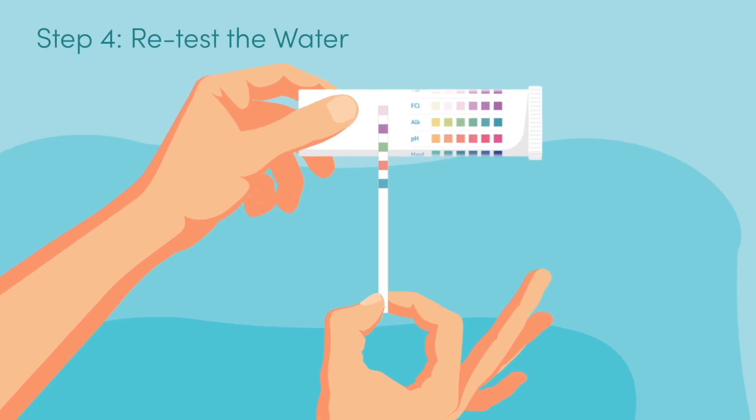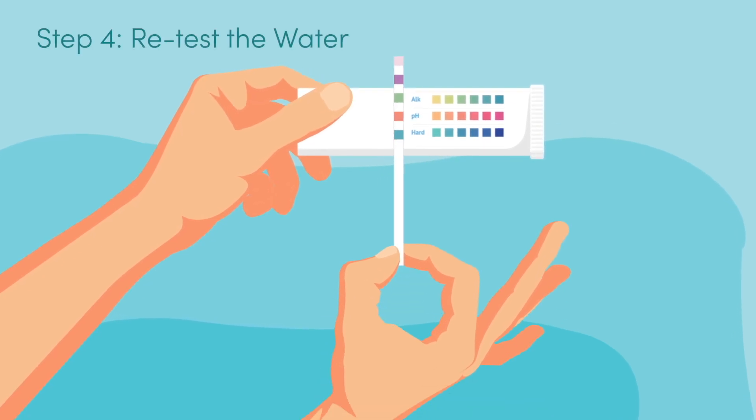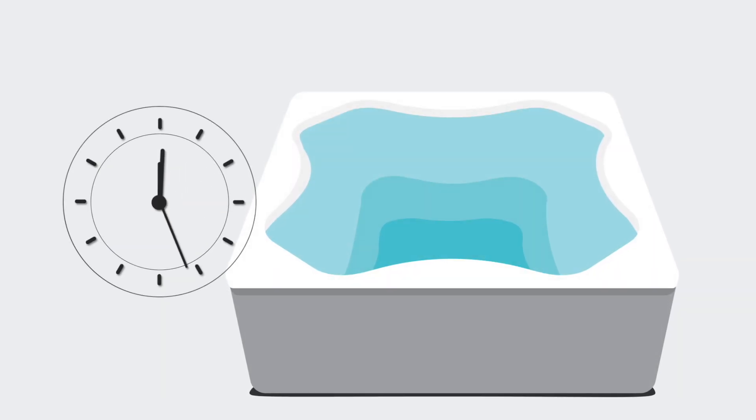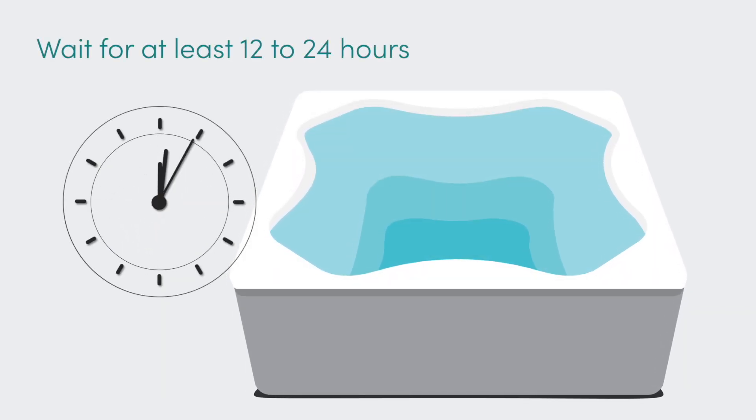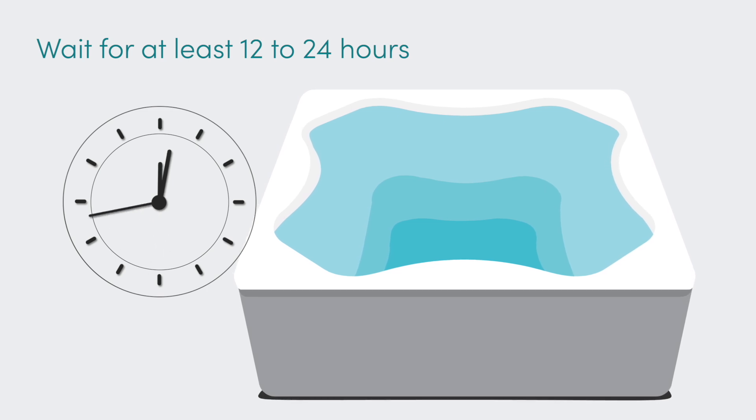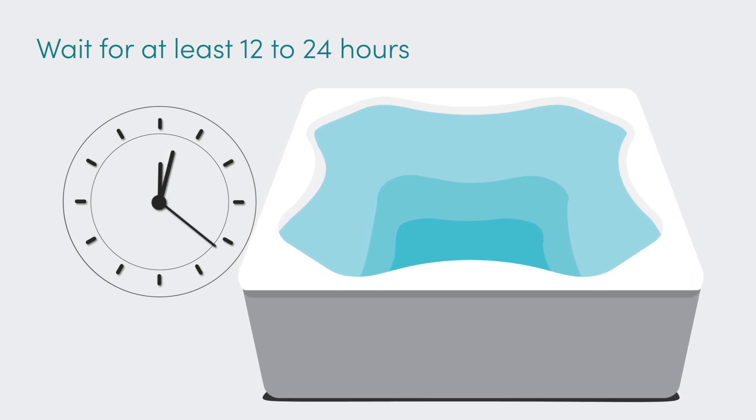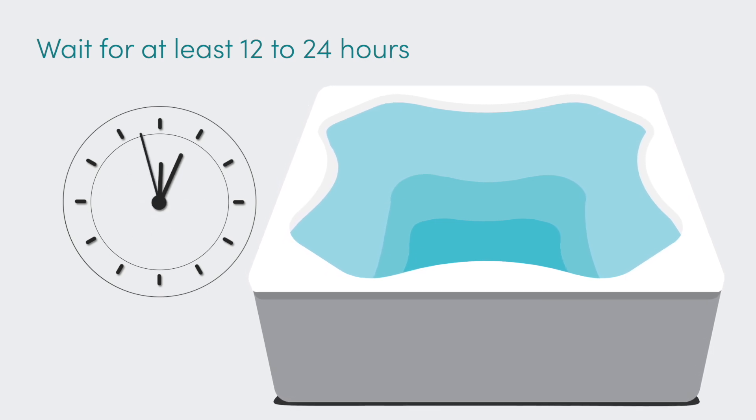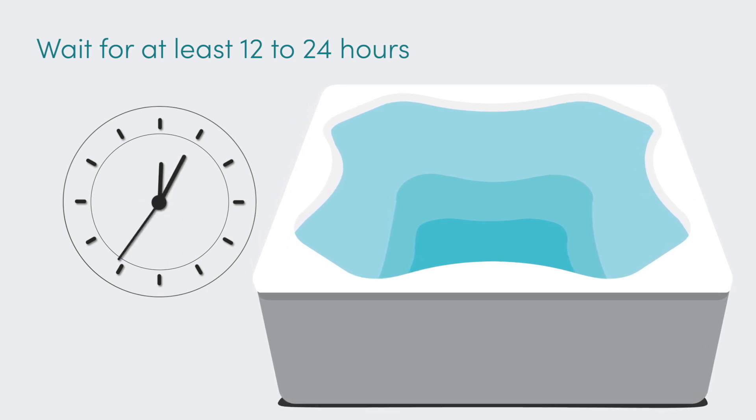Retest the water using a freshwater five-way test strip. If additional dosing is required to reach the correct alkalinity level, wait for at least 12 to 24 hours before you add more freshwater pH/alkalinity up or pH/alkalinity down to the water. This time is needed for the water to fully stabilize.